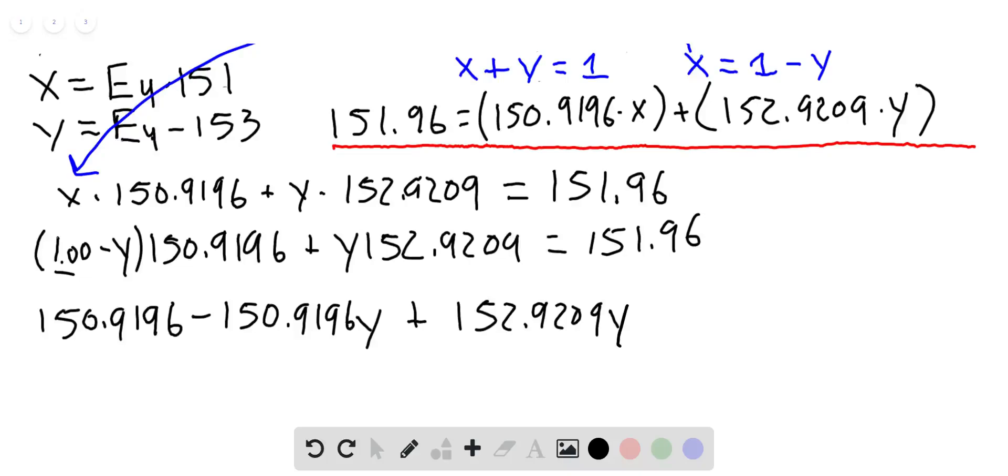Notice I just put the y there at the end as it should be, and this equals 151.96. Now it's just a matter of doing the simple algebra. We'll go ahead and subtract from both sides this amount. So if you subtract 151.96 minus the 150.9196, we get that equals, so once again if I do 151.96 minus 150.9196, this equals 1.0404.